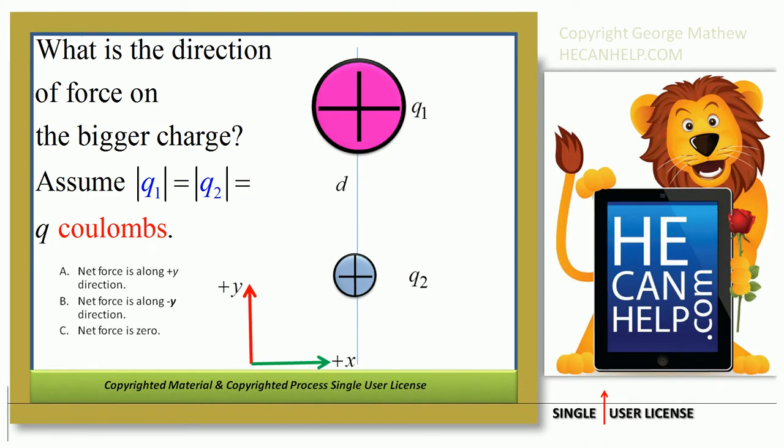What is the direction of force on the bigger charge? Assume magnitude of Q1 equal to magnitude of Q2 equal to Q Coulombs. You have two positive charges separated by a distance d.